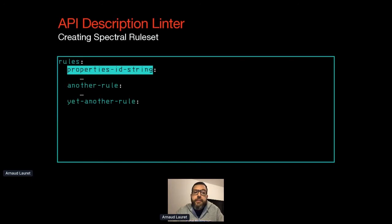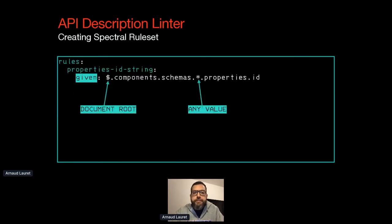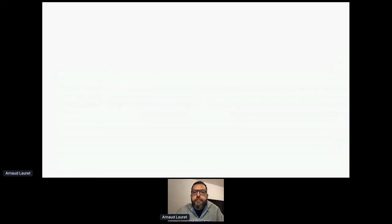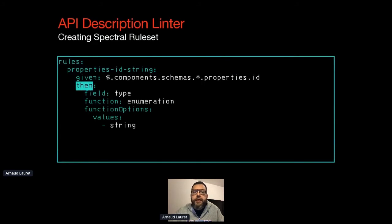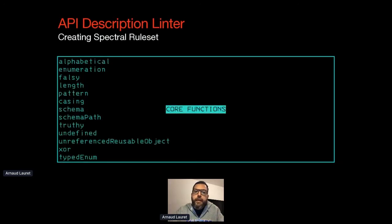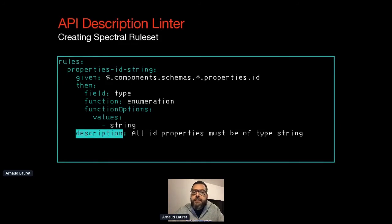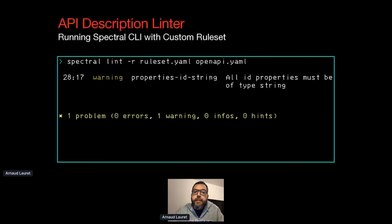Inside rules, each rule is identified by a name. A basic rule is composed of three elements. The first is the 'given' property, which is a JSON path indicating where in the document this rule will be applied — for example, targeting the id property of any reusable schema. The second is the 'then' property, which describes the controls to be done — here checking that the 'type' field value belongs to an enumeration with a single value: string.